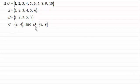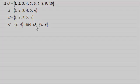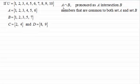Now the first operation I want to look at is this one. It's called A intersection B, and it represents the members or elements that are common to both the sets A and B, the two sets that we have surrounding this symbol.